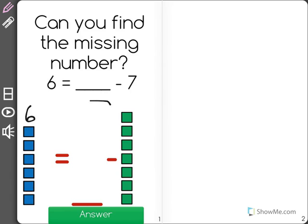6 equals blank minus 7. I know that this means we started with a certain number and took away 7 to equal 6.